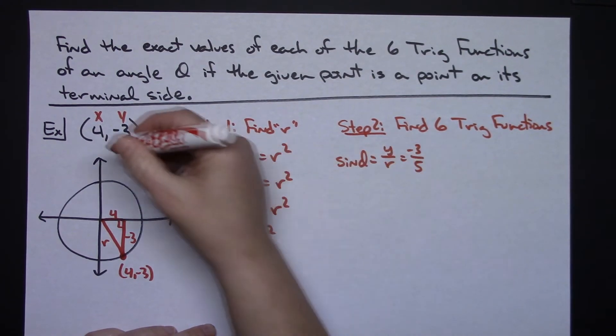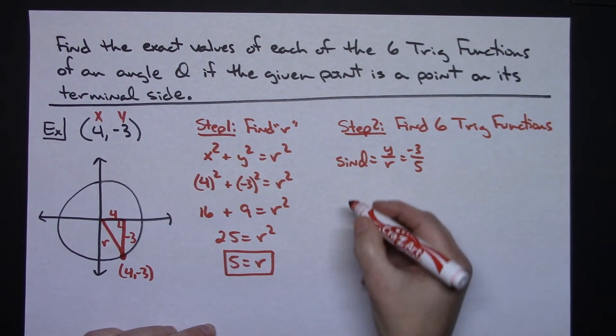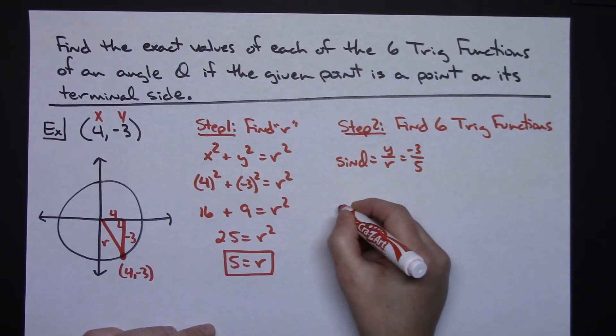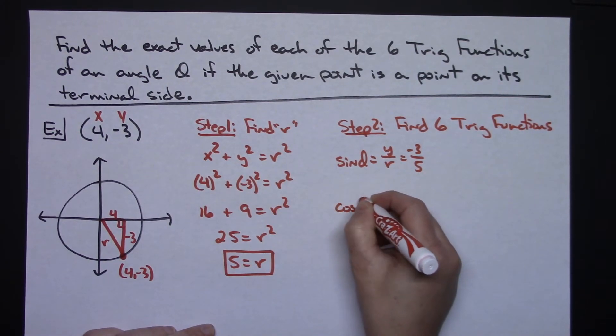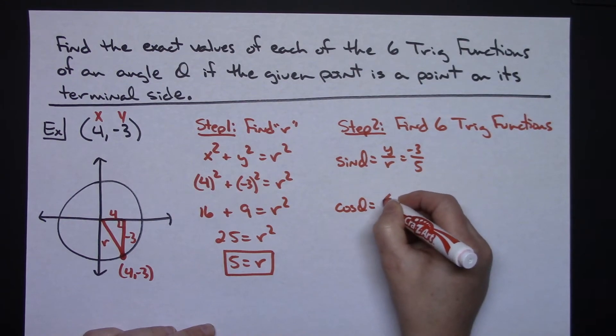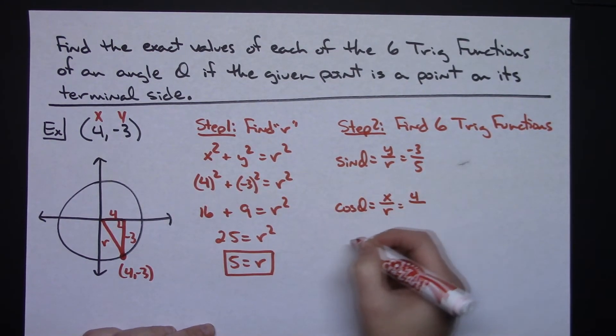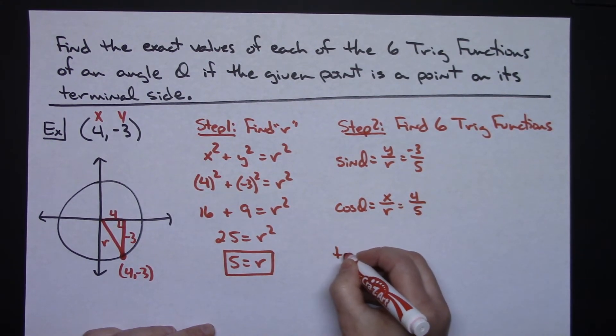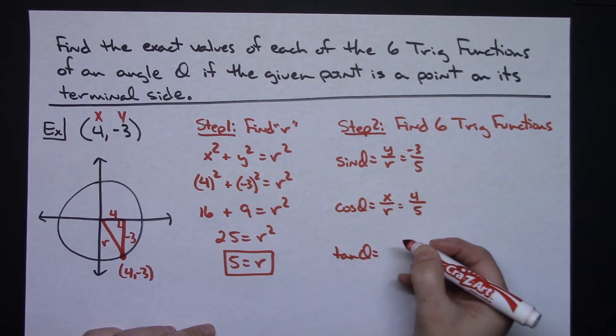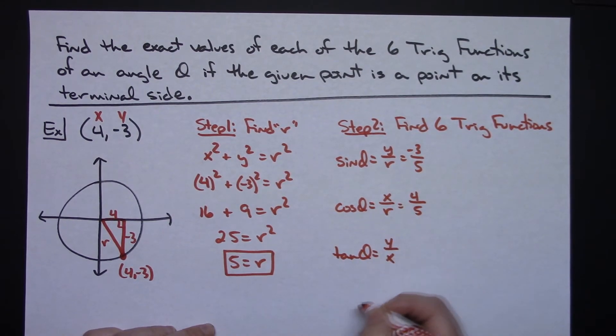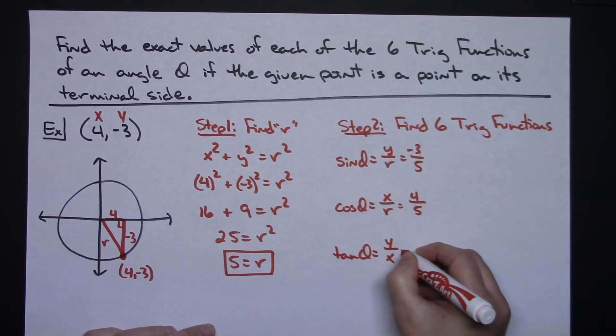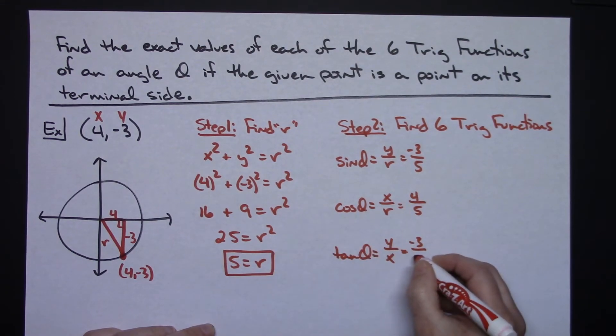It's a matter of once you know x and y and r, it's a matter of just plugging them in really simply there. Cosine of theta we gave as a definition of x over r. My x value is 4 and my r value is 5. So it's 4 fifths. Tangent of theta we gave as a definition of y over x. My y is negative 3 and my x is 4. So negative 3 fourths.